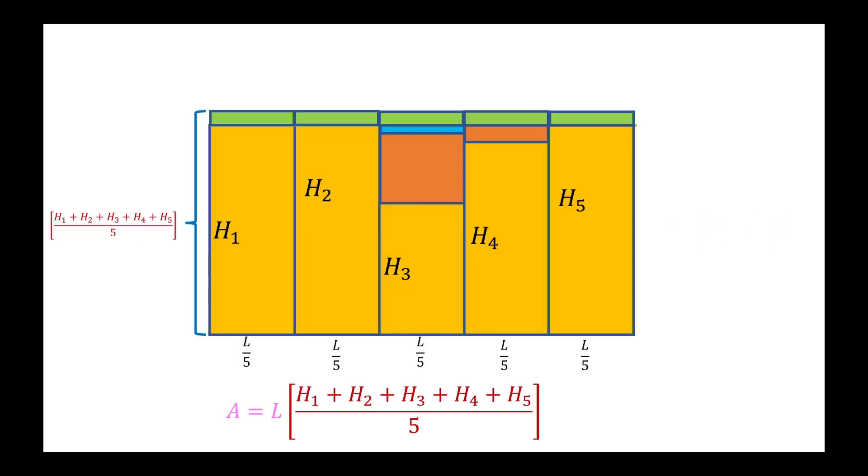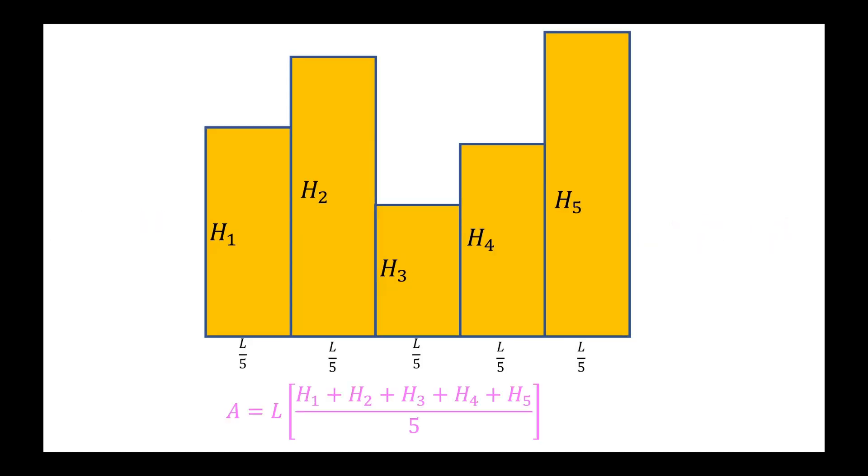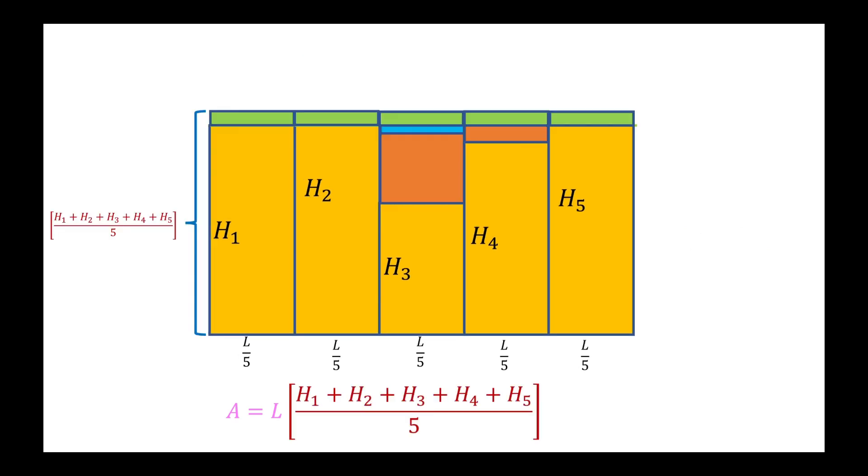So in essence, this is how we find areas. We just redistribute all the heights so that they're all the same, and then multiply by the length of the shape.